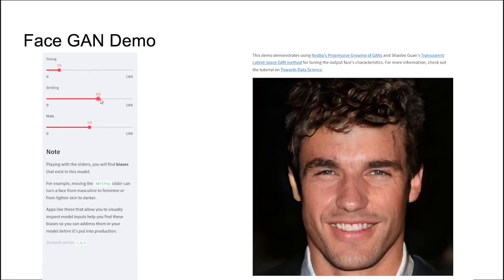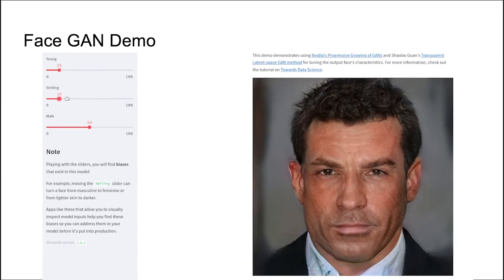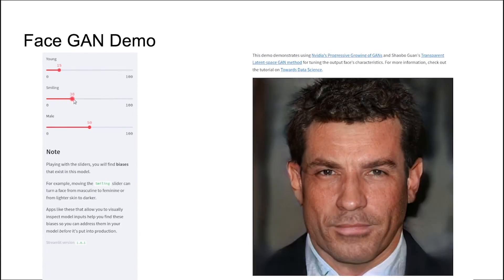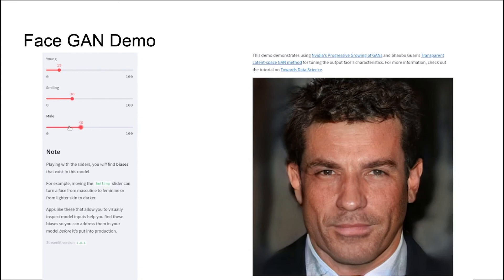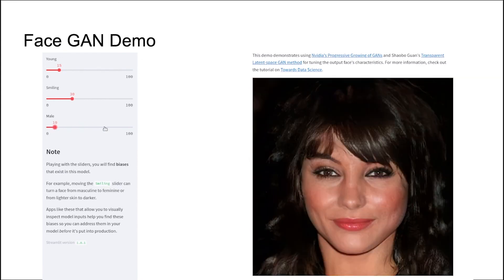We can adjust three different conditions — age, smile, and gender — as the input of the network. Based on different inputs, the face GAN can generate different faces.